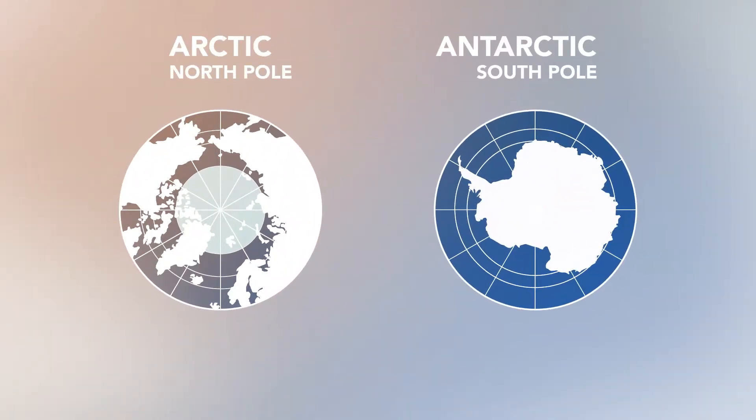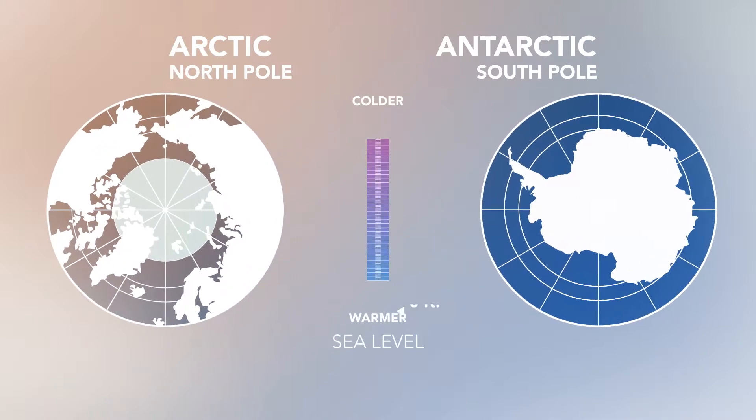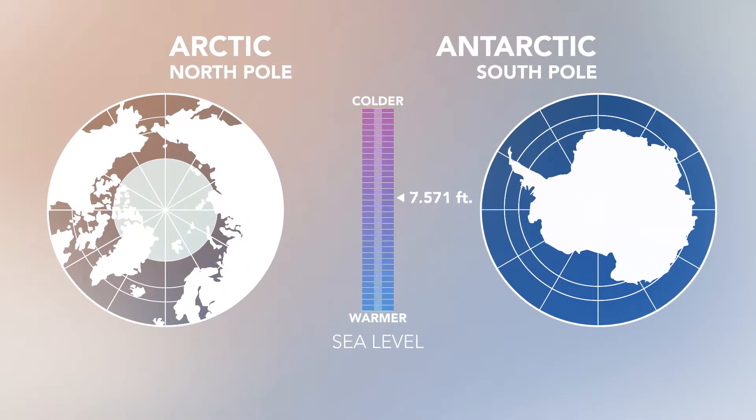The Arctic is usually warmer than the Antarctic because the elevation is generally lower. The South Pole, for example, is located at 9,301 feet above sea level, while the North Pole is at sea level. This keeps temperatures well below freezing at the South Pole all year round.